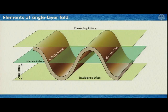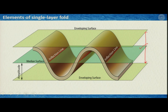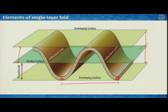In the illustration: the enveloping surface envelopes the fold from outside; the fold height is the distance from one enveloping surface to the other; the median surface in green connects the successive inflection lines; the amplitude is the distance from one enveloping surface to the median surface; and the wavelength is the distance between the hinge point of one antiform and the hinge point of the next antiform.